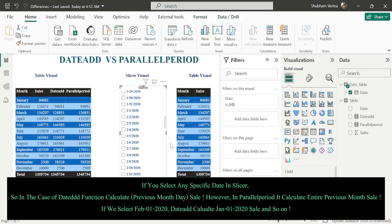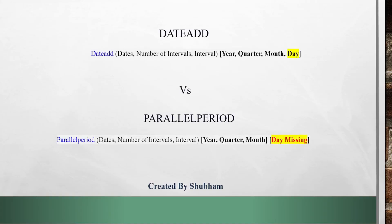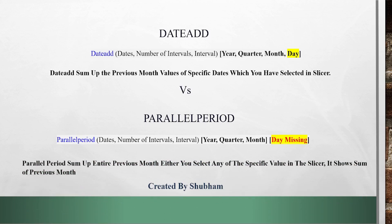To summarize the two key differences: First, regarding interval parameters — DATEADD supports day, month, quarter, and year, but PARALLELPERIOD does not have a 'day' parameter. Second, when you select a specific date in the slicer, DATEADD sums up the previous month's values for that specific date only, whereas PARALLELPERIOD sums up the entire previous month regardless of which specific date you select.